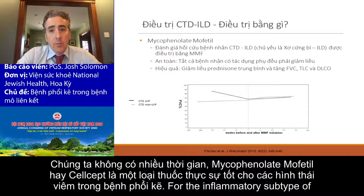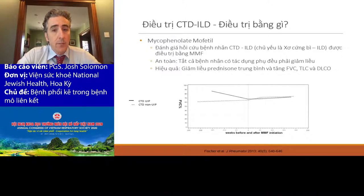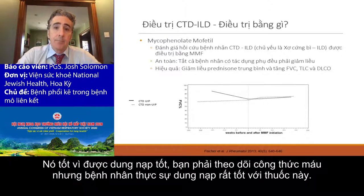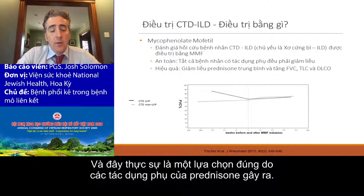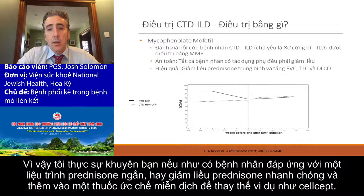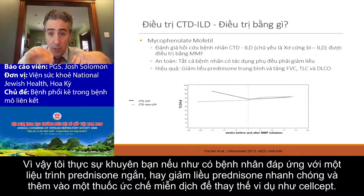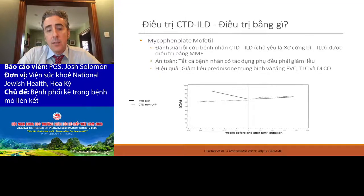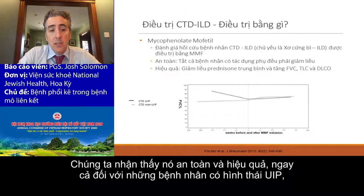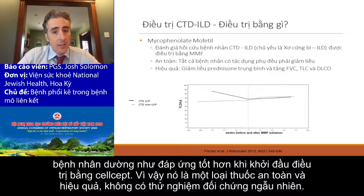Mycophenolate mofetil or CellCept is a really good drug for the inflammatory subtype of ILD. It's good because it's well tolerated, though you do have to monitor LFTs and CBC. This should be your drug of choice to replace prednisone — we used to put people on prednisone long-term, but that's not right because of all the side effects. If someone is responding to a short prednisone course, quickly drop that prednisone and add CellCept. A 2013 review found CellCept was safe and effective in connective tissue related ILD patients, and even patients with a UIP pattern seemed to do better after initiating CellCept.